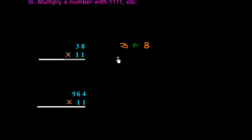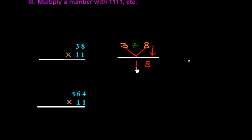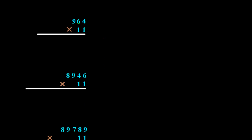Now I am drawing one line here. First we write down 8, then we add 3 plus 8 which is 11, so we put 1 here and carry 1. Then 1 plus 3 is 4, so we get the answer 418.